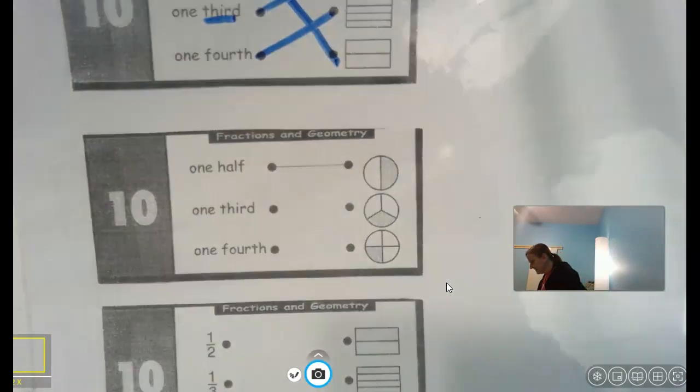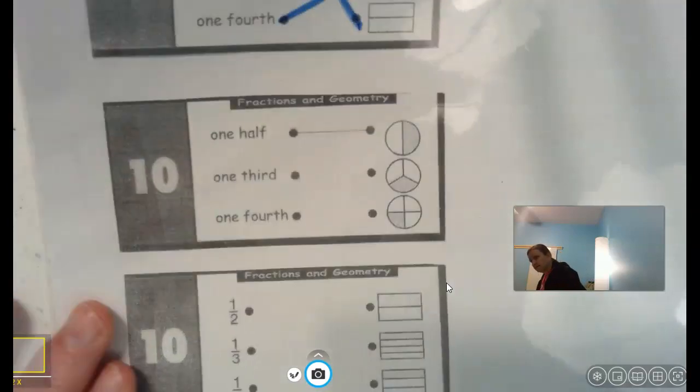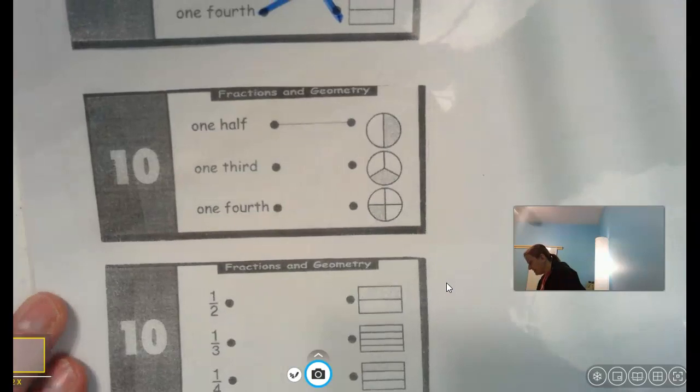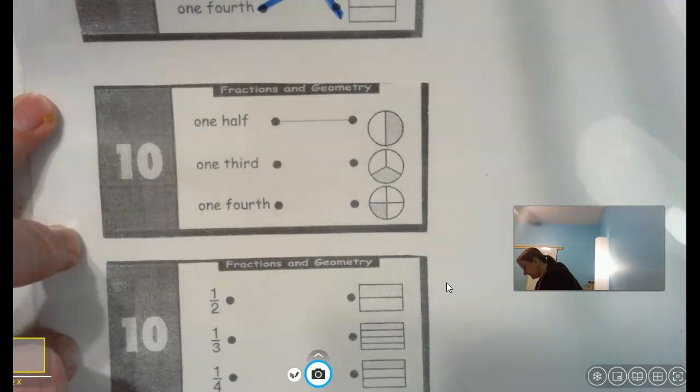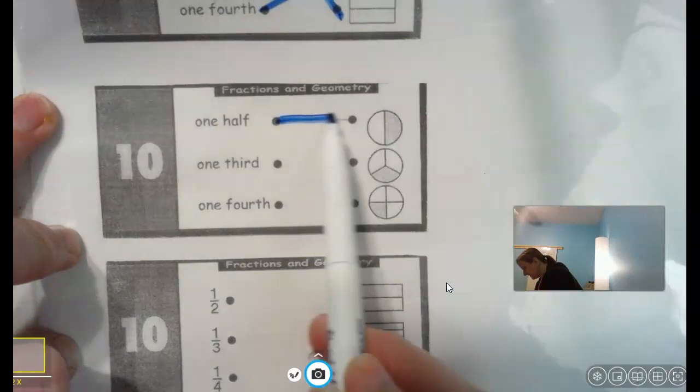It doesn't have to be a rectangle. It could be a circle. You can cut a circle into one half, one third, and one fourth. So this circle right here, they gave you the answer already, is cut into one half.